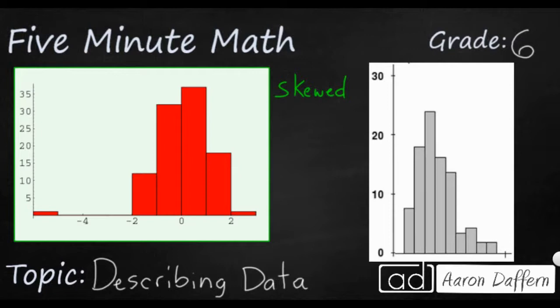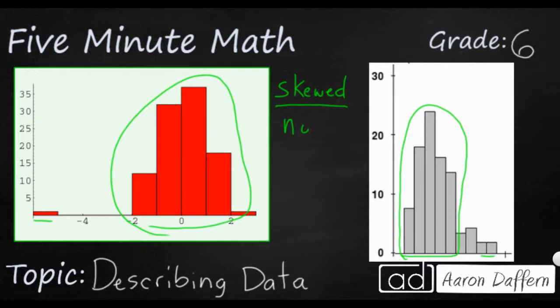So when your data is skewed, that means it's kind of bunched together right here. And then there's going to be a few pieces of information that kind of stand off to the side. So skewed means it's not exactly even, it's not symmetrical.